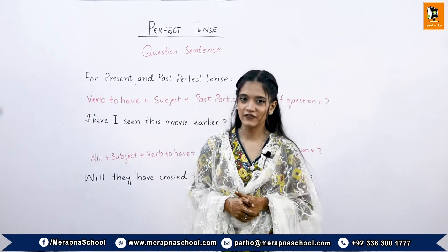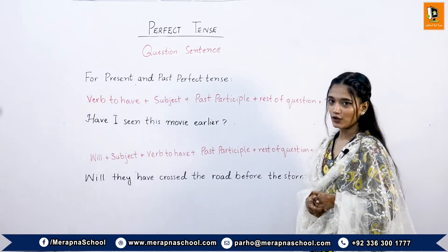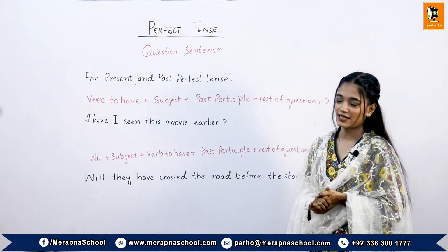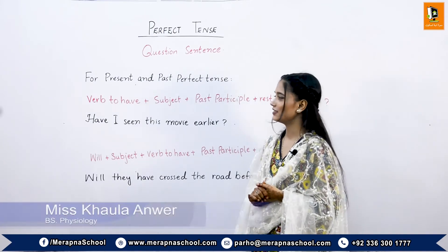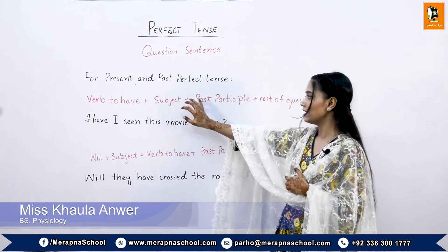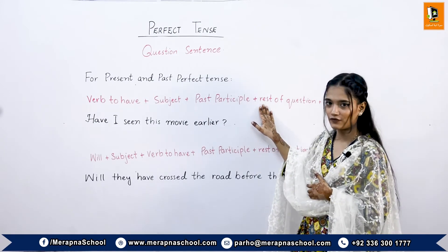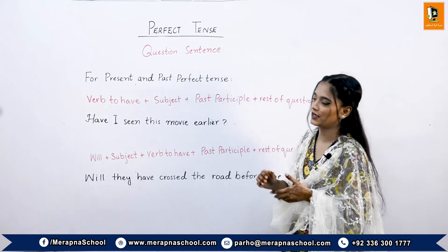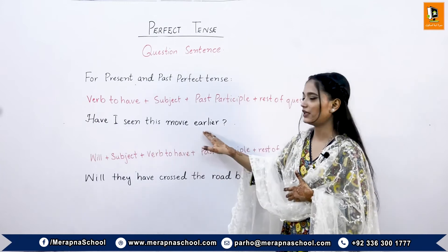The perfect tenses can also be converted into question sentences. For present and past perfect tenses, the formation is: verb to have, then subject, then the past participle form of the verb, then the rest of the question, and a question mark at the end. For example: Have I seen this movie earlier?